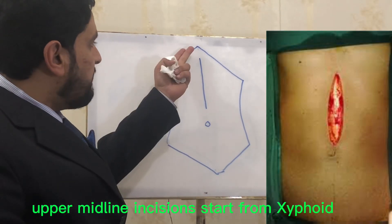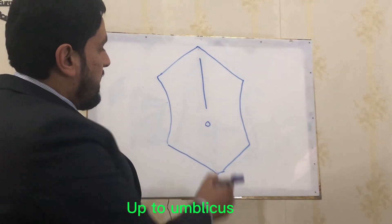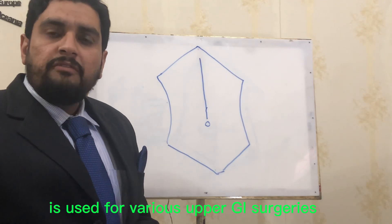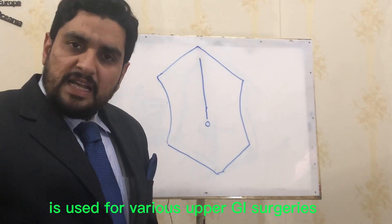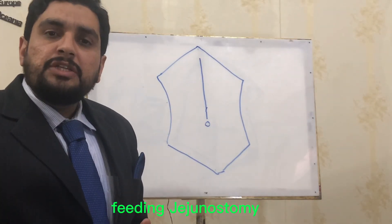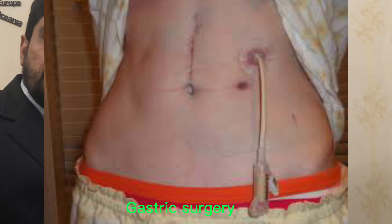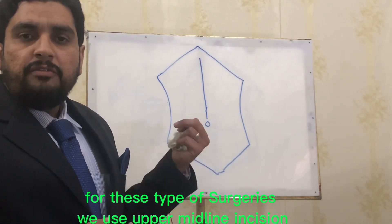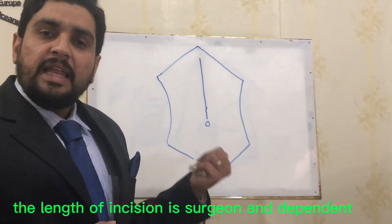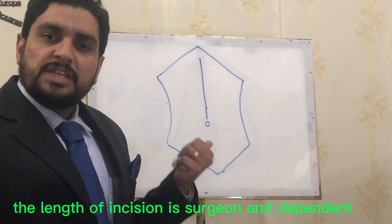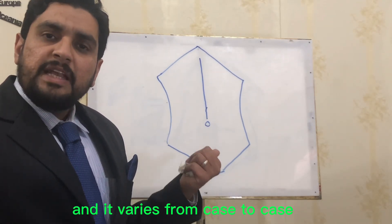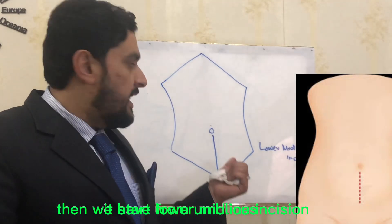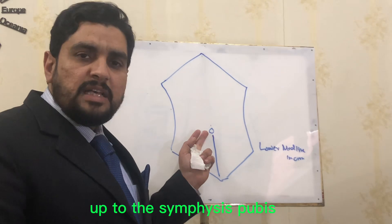The upper midline incision starts from the xiphisternum up to the umbilicus. It is used for various upper GI surgeries, for example feeding jejunostomy, gastric surgeries, and jejunum surgeries. For these types of surgeries we use the upper midline incision. The length of incision is surgeon dependent and varies from case to case.